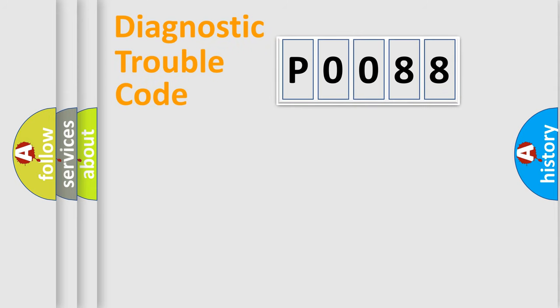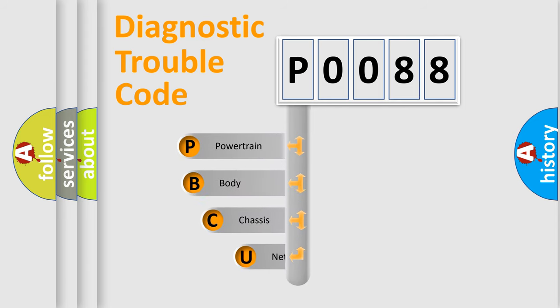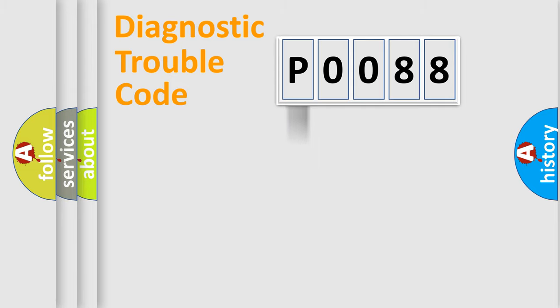First, let's look at the history of diagnostic fault code composition according to the OBD2 protocol, which is unified for all automakers since 2000. We divide the electrical system of the automobile into four basic units: Powertrain, Body, Chassis, and Network.